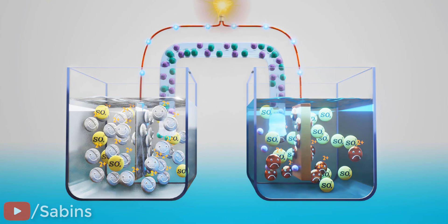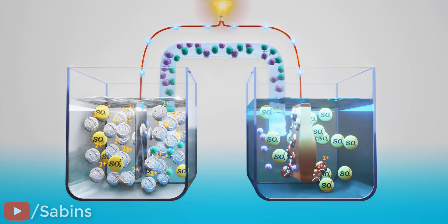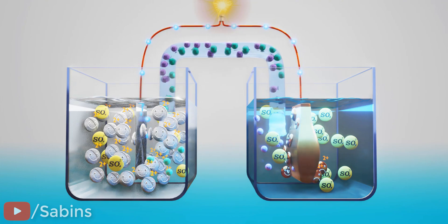The exact opposite happens on the copper plate side, which becomes thicker. The galvanic cell will continue its operation until the zinc is completely depleted or the ions in the salt bridge have been completely exhausted.